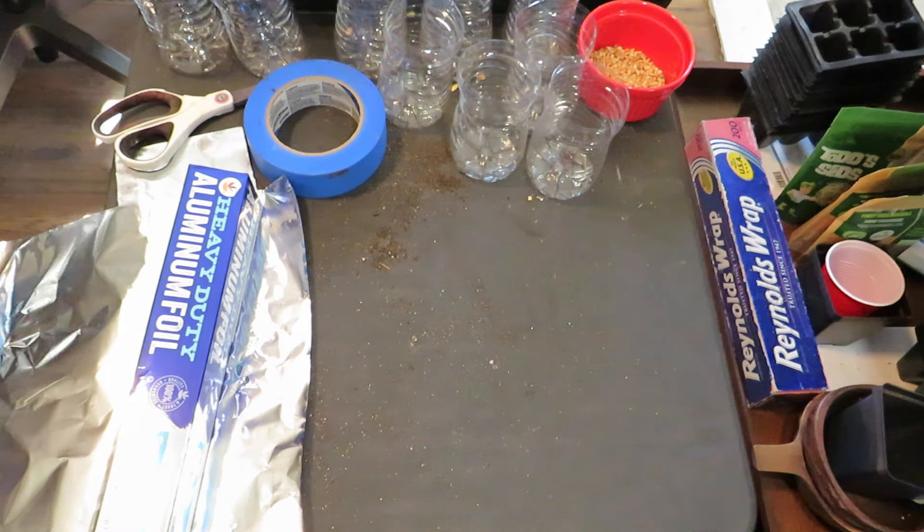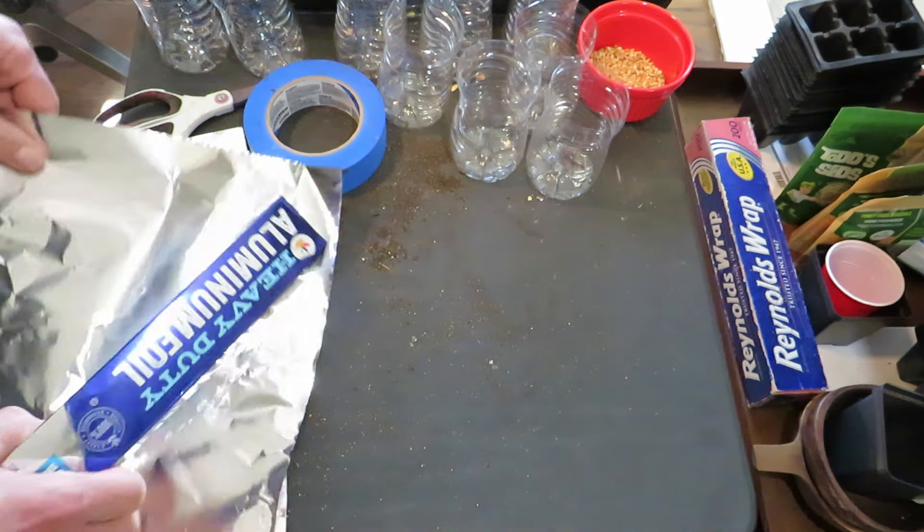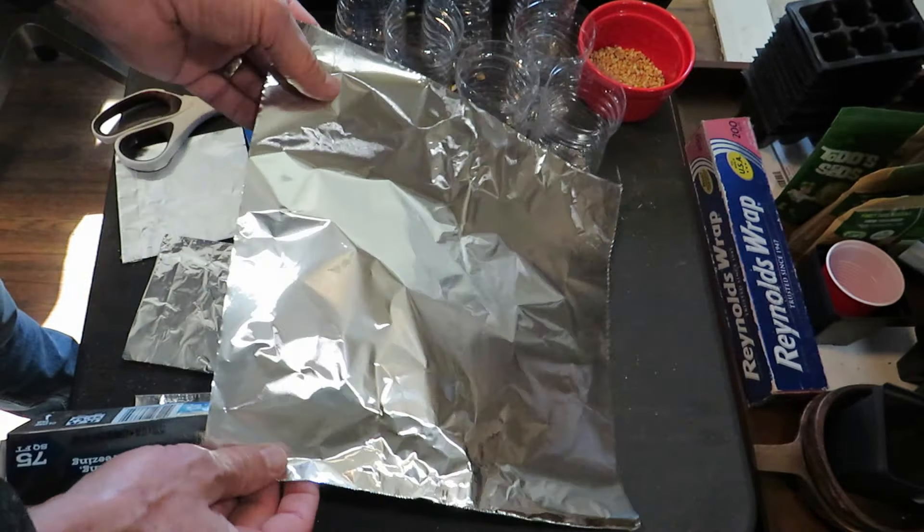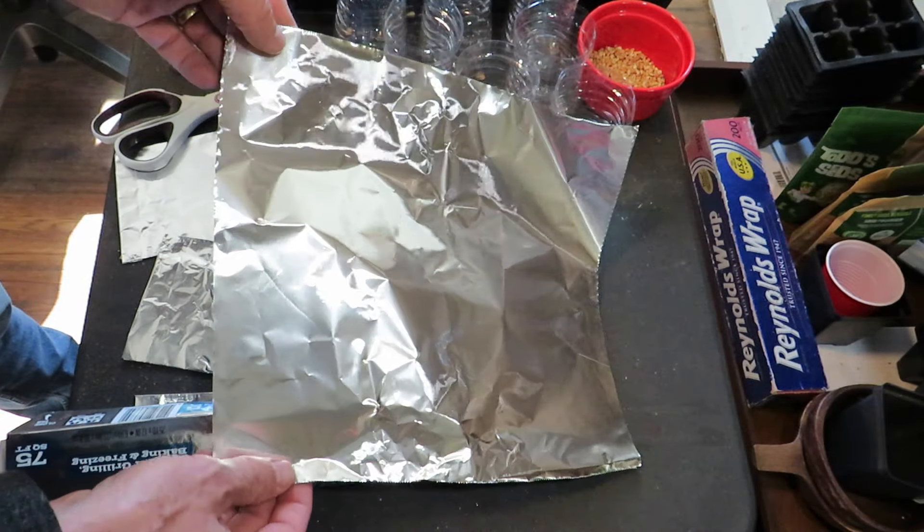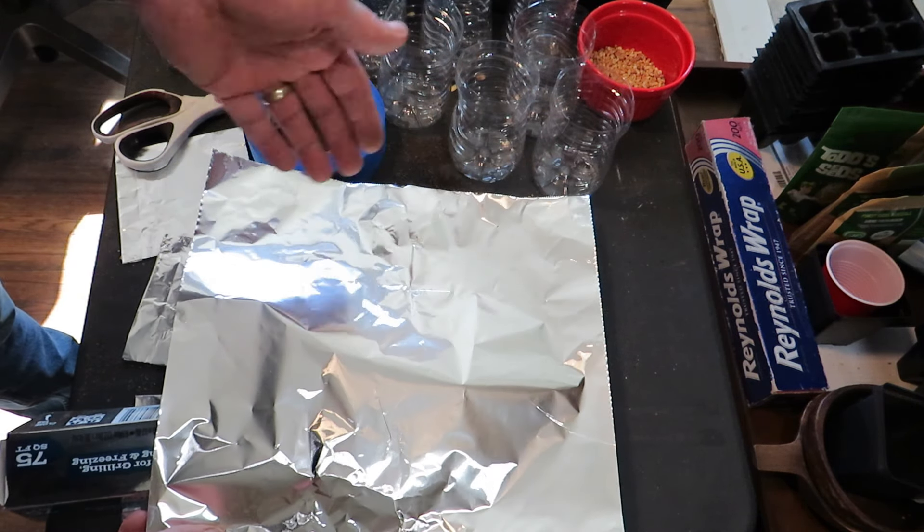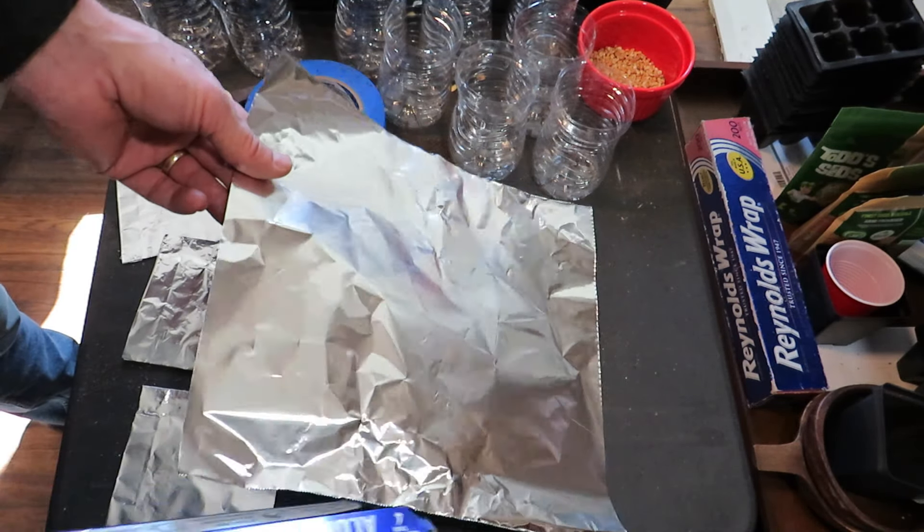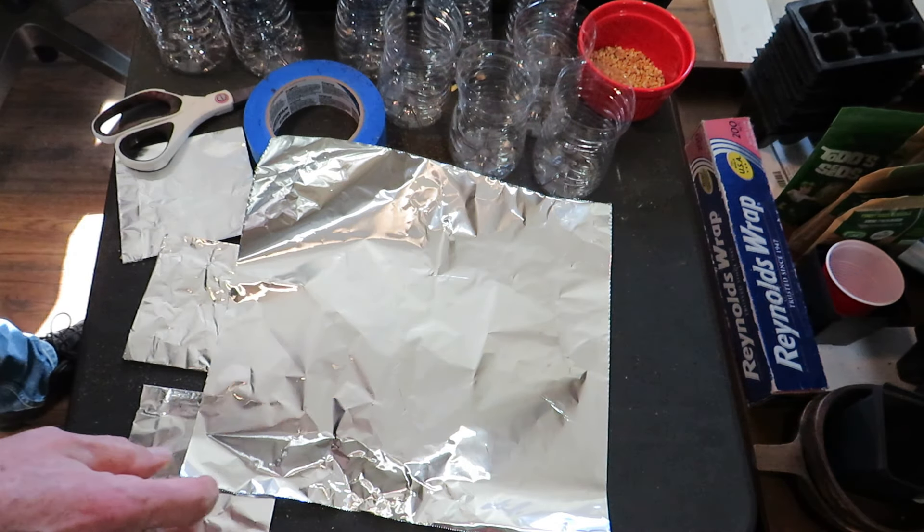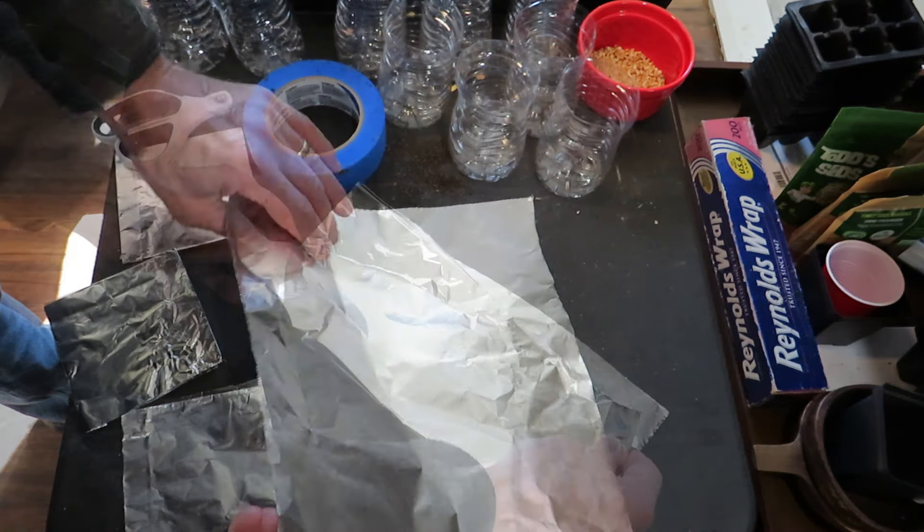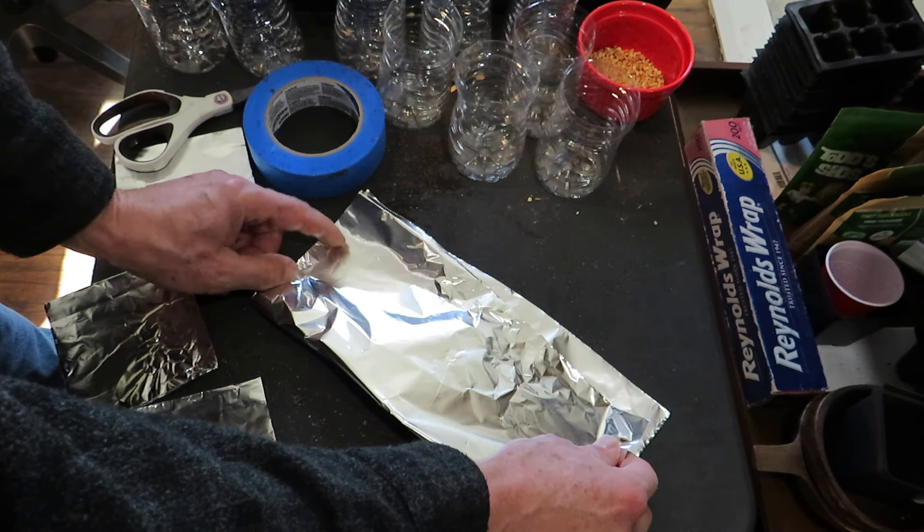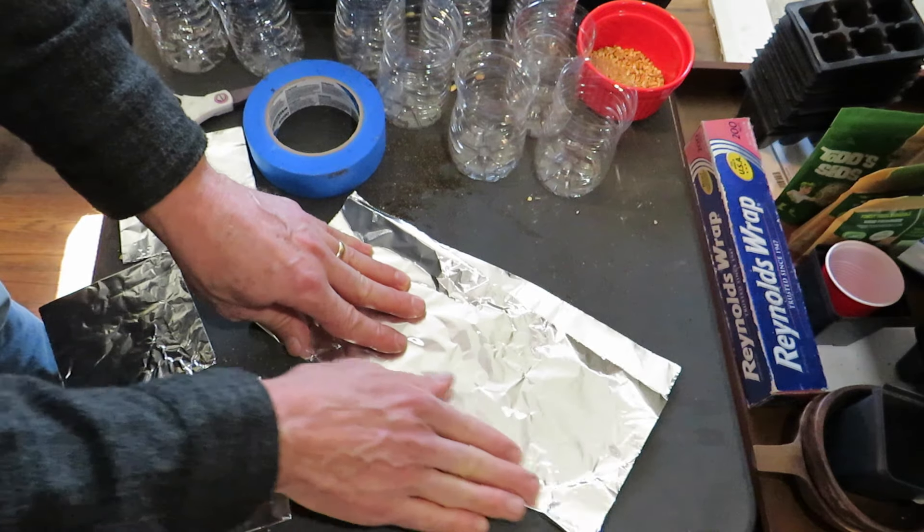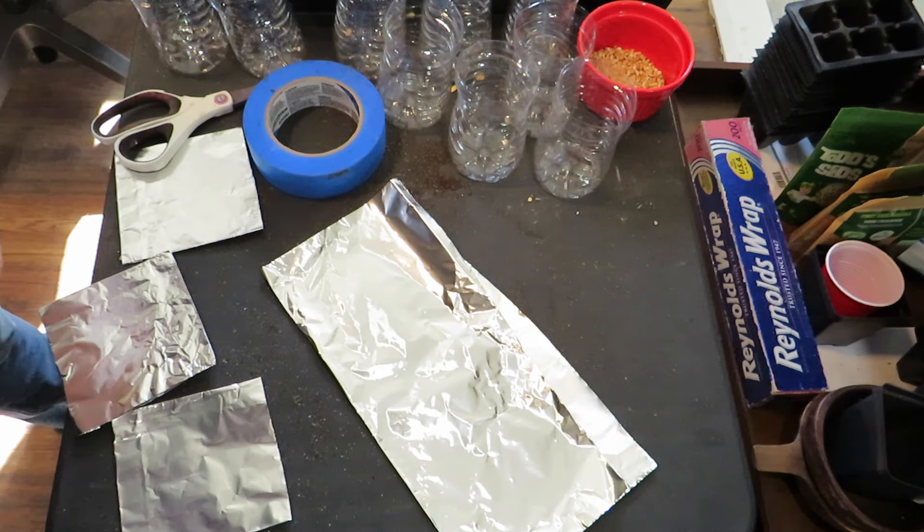Let's start with the foil trays. You want to do this by simply tearing out a piece of the heavy duty foil and make it so that it's about square. It doesn't have to be perfect. Don't worry about perfection, it's not really important. Plants don't care. So we're going to fold this over and you just want to line the edges up the best that you can and then press it down. You can see that it's not perfect.